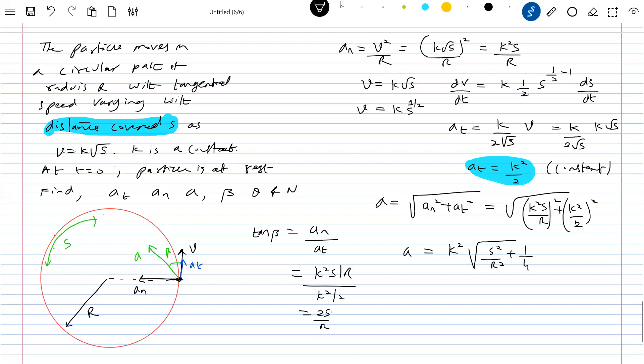We know V equal to R omega. Shall I do like this or any other alternative? So instead better, let me go for alpha now. Because we know A tangential. As we know, A tangential equal to R alpha. What is A tangential? K square by 2. Not alpha. So what is alpha? K square by 2R.